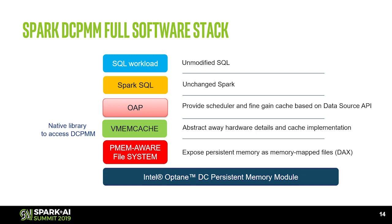This picture shows the total architecture hierarchy for the OAP project. At the bottom is the hardware — the Optane DC Persistent Memory module. To maximize performance, you need to mount it using a Persistent Memory-aware file system with the DAX option — Direct Access. On top of that is a native library called vmemcache, which abstracts the hardware and cache implementation. On top of that is OAP — a Scala-based implementation providing features like the scheduler and fine-grained cache based on the data source public API. Beyond this layer is the unchanged Spark and unchanged SQL, so it's totally transparent to users.